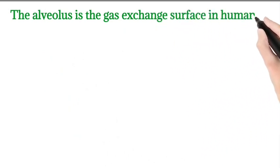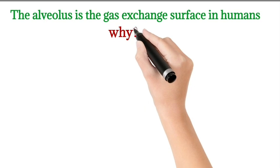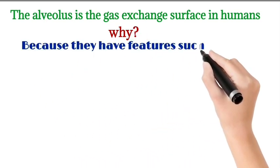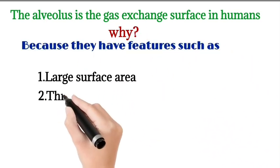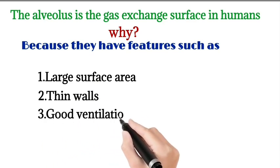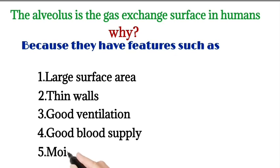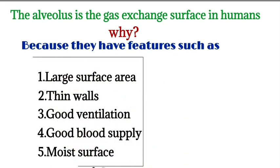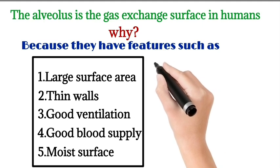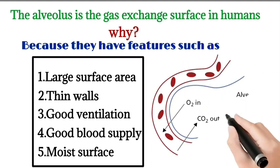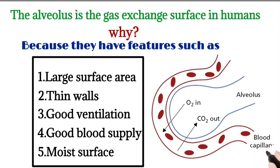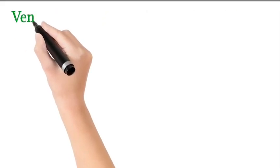Next we move on to the alveolus. The alveolus is the gas exchange surface in humans. This is because they have features such as a large surface area, thin walls, good ventilation, good blood supply, and a moist surface. The picture shows gas exchange happening between the alveolus and the blood capillary, where oxygen and carbon dioxide are exchanged by diffusion.